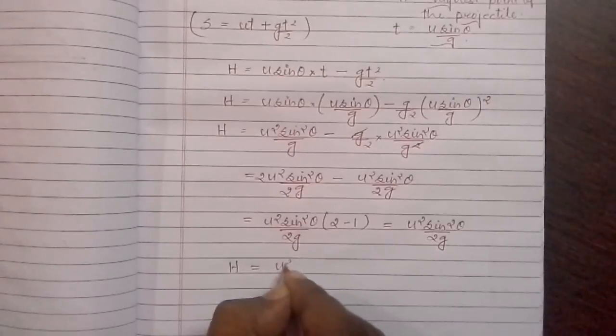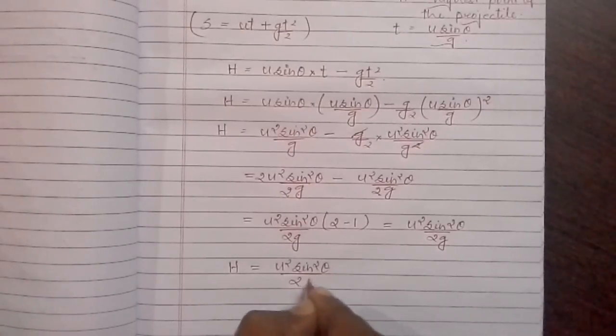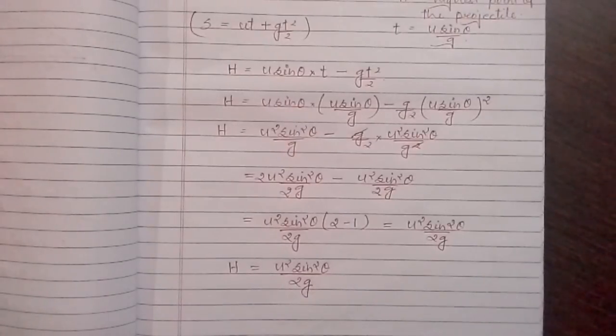We can write finally h equals u square sin square theta by 2g. This is the expression for the maximum height of a projectile.